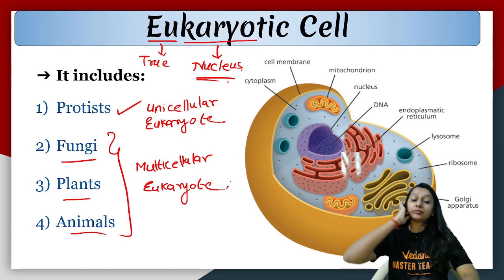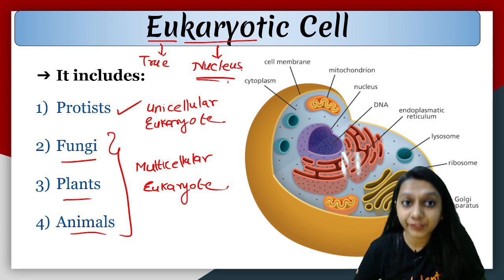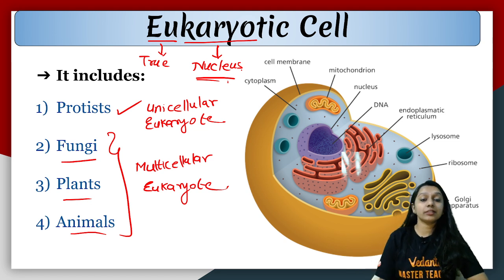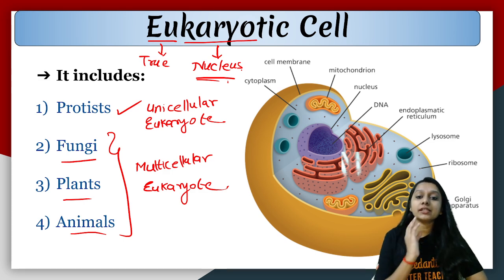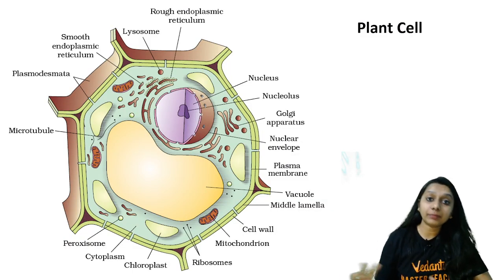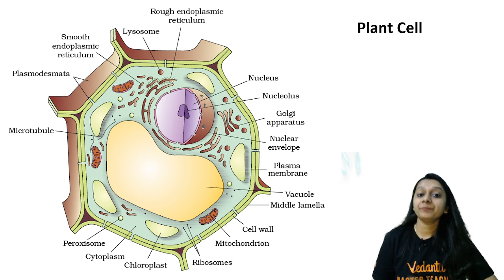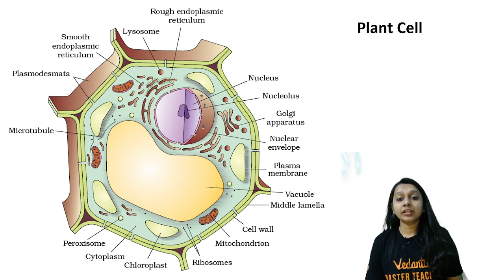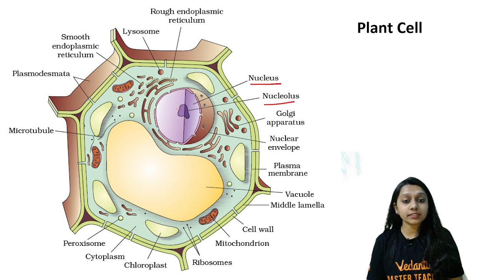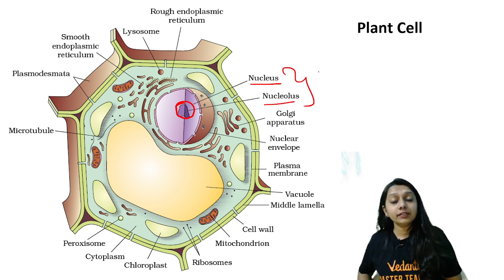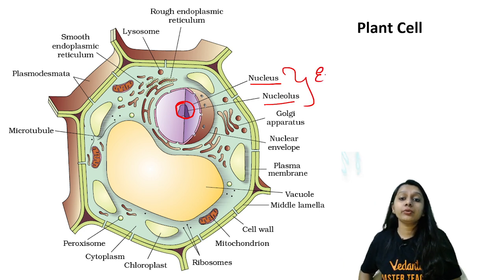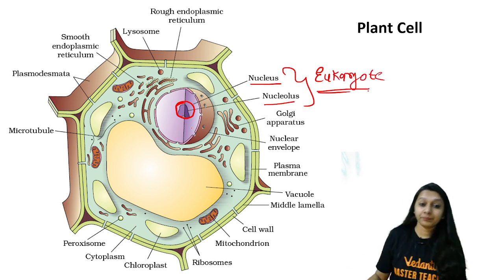So to remember: Protista will be unicellular eukaryote; Fungi, Plants, and Animals will be multicellular eukaryotes. In all of these, eukaryotic cells have a well-developed nucleus. If you look at plant cells and animal cells, the most important difference you see first is the nucleus — it is a characteristic feature of eukaryotes.